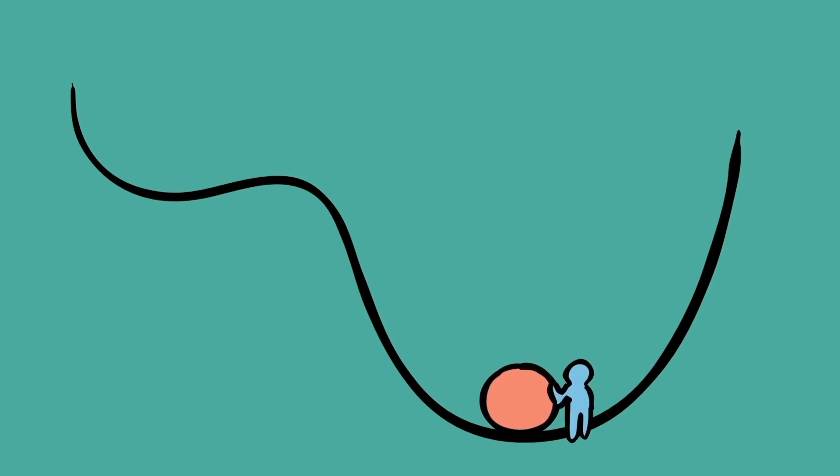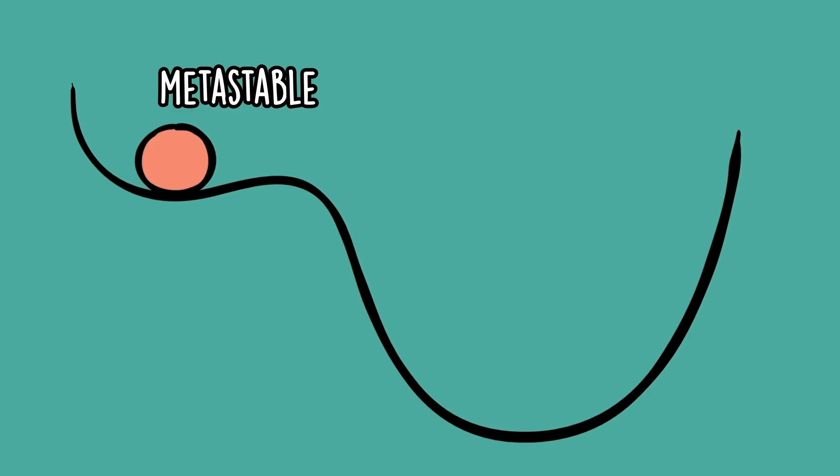However, if the ball is somehow pushed to the second valley, it's pretty stable in that it won't move on its own, but it also won't take much of a push for it to get back down to the lower valley. So it's kind of stable, but not super stable. It's metastable.